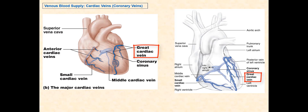We begin with the great cardiac vein. It is the longest coronary or cardiac vein. This vein begins at the apex of the heart and ascends along the anterior interventricular sulcus, lying next to the anterior interventricular artery, also known as the left anterior descending artery. It continues to encircle or wrap around the heart along the coronary sulcus alongside the circumflex artery. The great cardiac vein converges with the coronary sinus at the posterior side of the heart.